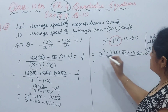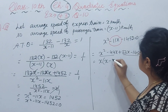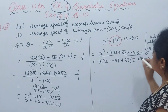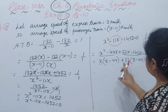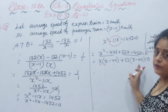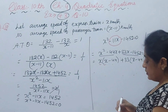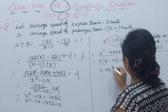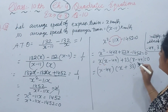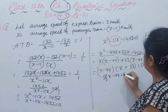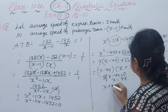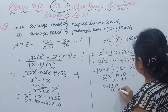In the first two terms, x is common, giving x(x minus 44). In the last two terms, 33 is common, giving 33(x minus 44). So (x minus 44) is common in both terms. Taking (x minus 44) outside: (x minus 44)(x plus 33) equals 0. If x minus 44 equals 0, then x equals 44. And if x plus 33 equals 0, then x equals minus 33.